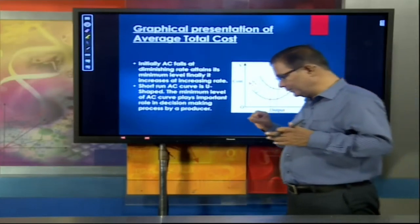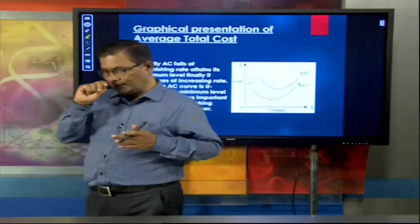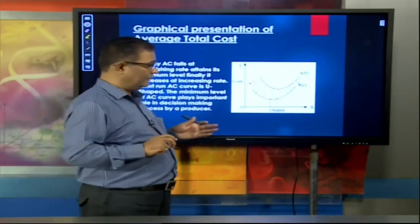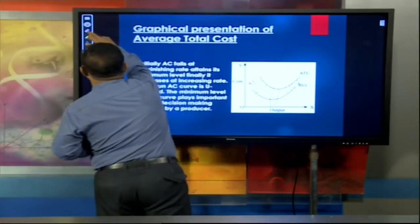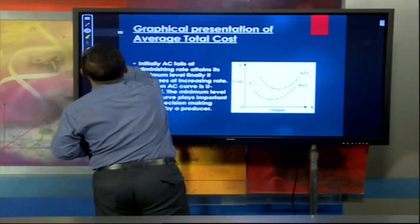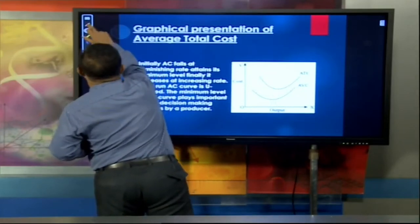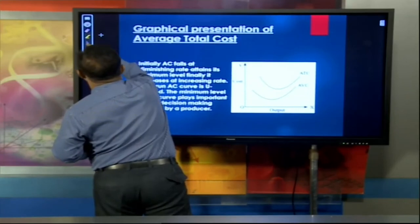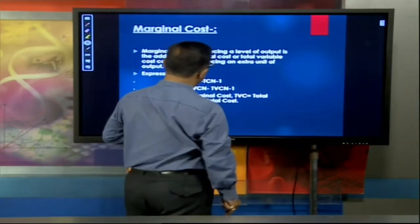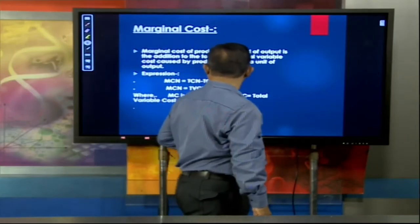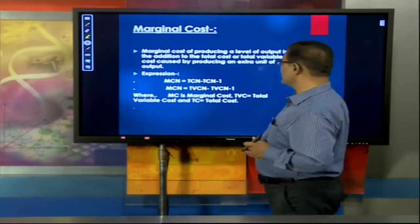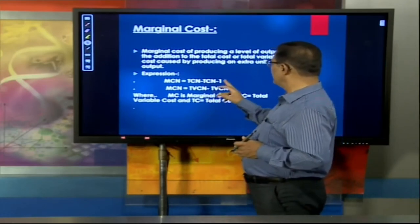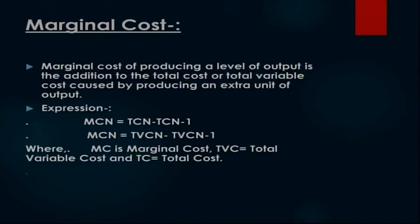Clear? So this is what about the concept of ATC, AFC, and AVC. Next — marginal cost. Marginal cost = TCn minus TCn−1. The margin means additional — addition to the total. When we talk about TC, as the unit of output increases, TC increases at an increasing rate, meaning the additional unit cost is increasing.